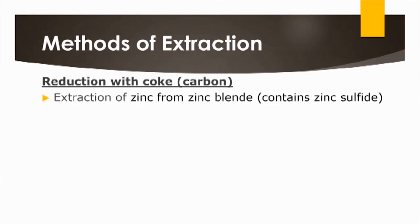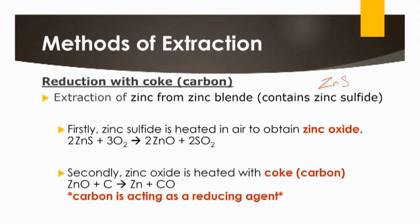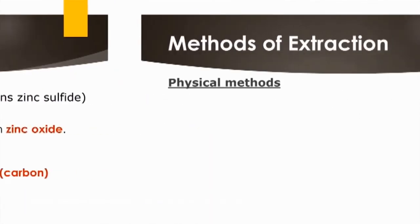Here is an example: extraction of zinc from zinc blende. Zinc blende contains the mineral zinc sulfide (ZnS). First, zinc sulfide is heated in air with oxygen to form zinc oxide and sulfur dioxide. Zinc oxide is then heated with coke (carbon) to produce pure zinc metal. Carbon acts as the reducing agent here — you can verify this by working out the oxidation states of the elements before and after the reaction.